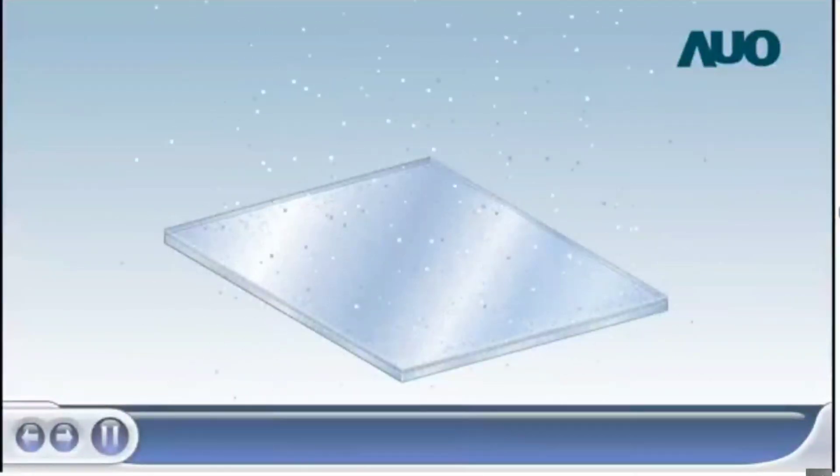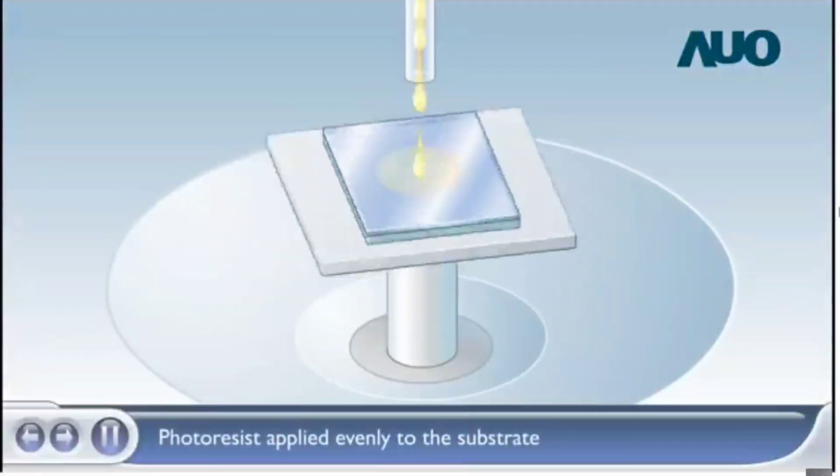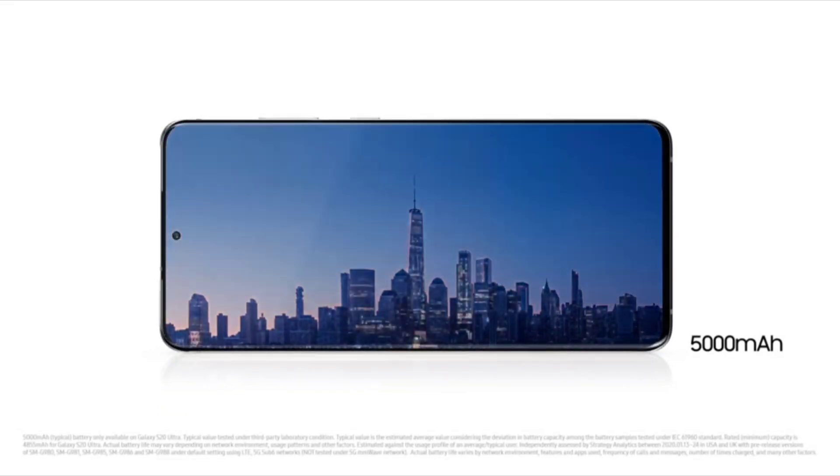Both LCD and OLED pixels are controlled by a backplane, which could be LTPS or LTPO. In the case of LTPS, the backplane is LTPS and it suffers from some disadvantages — reduced resolution, reduced response times, and reduced refresh rates. In the case of LTPO, the backplane is divided into two sections: the switching section uses LTPS, and the driving section uses IGZO, which is transparent, thereby allowing more light and having several other advantages.